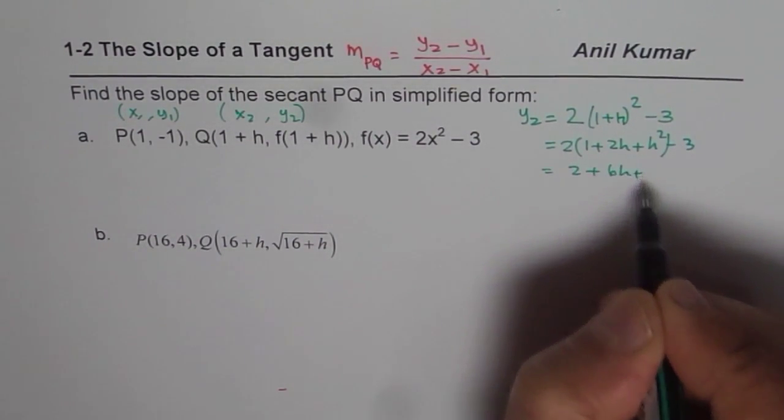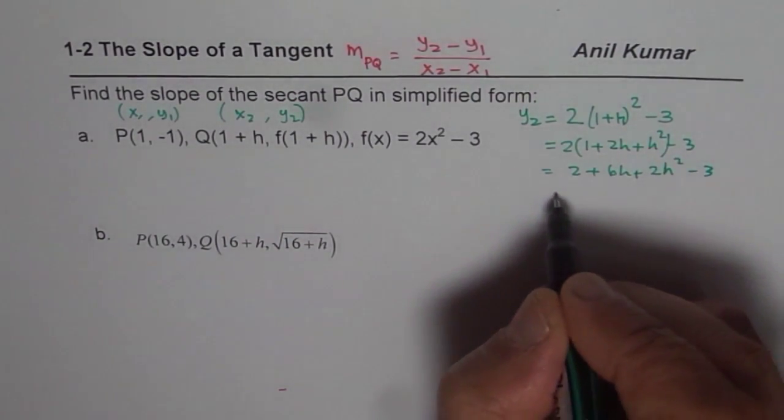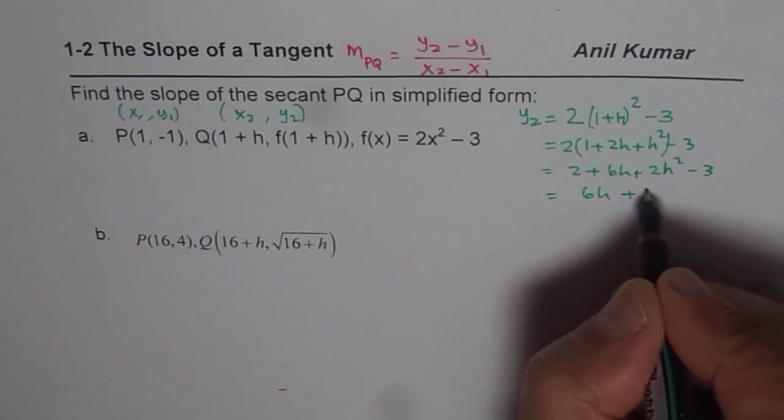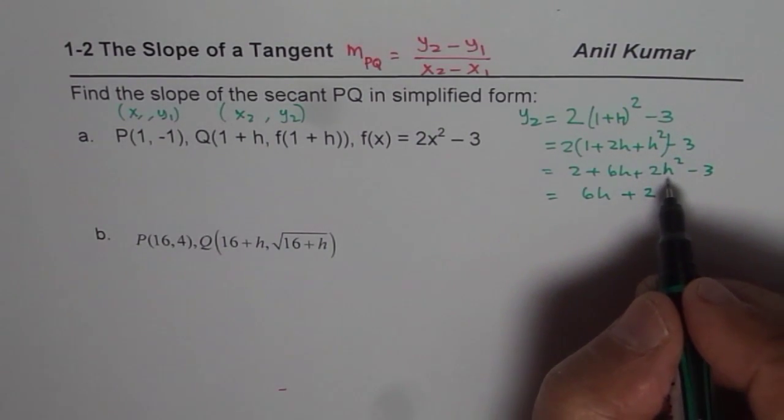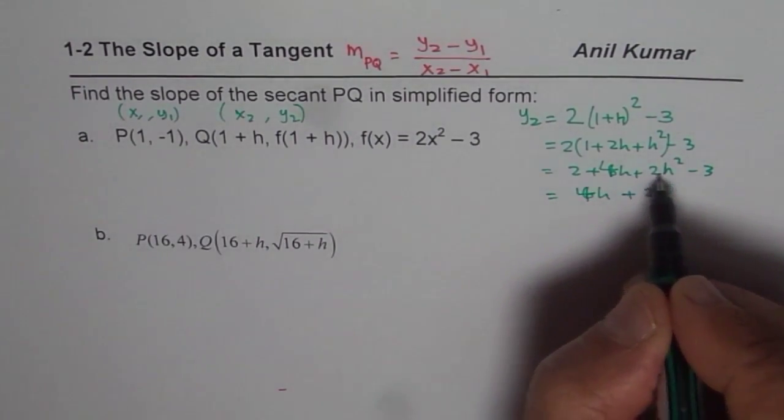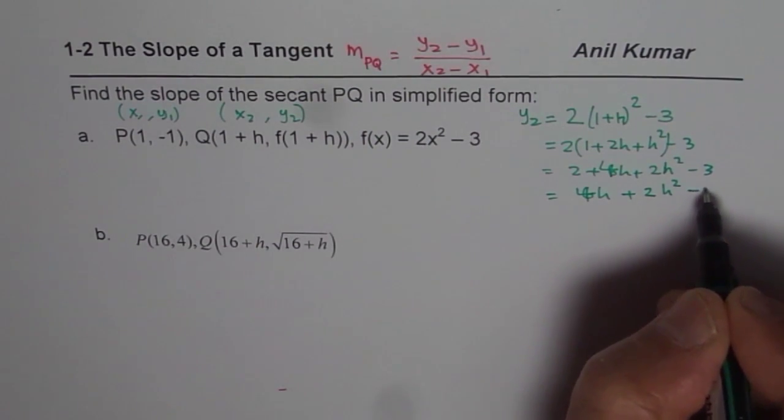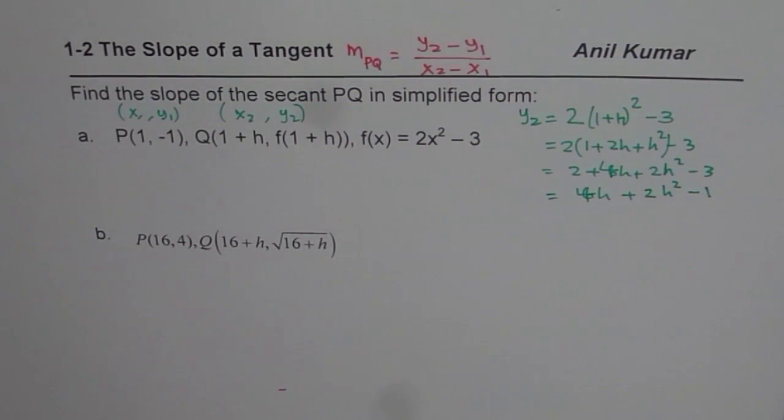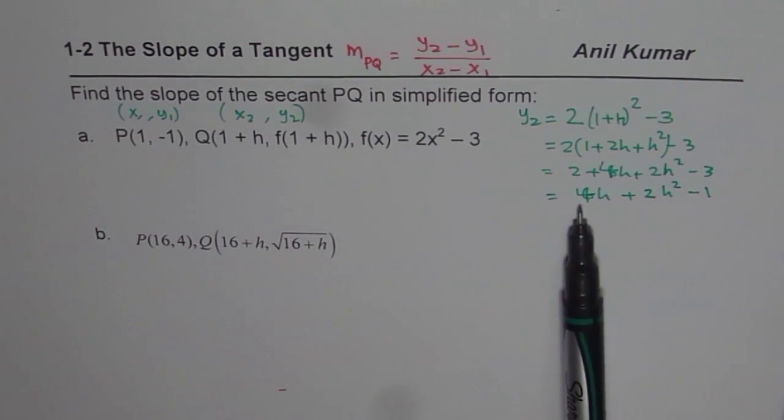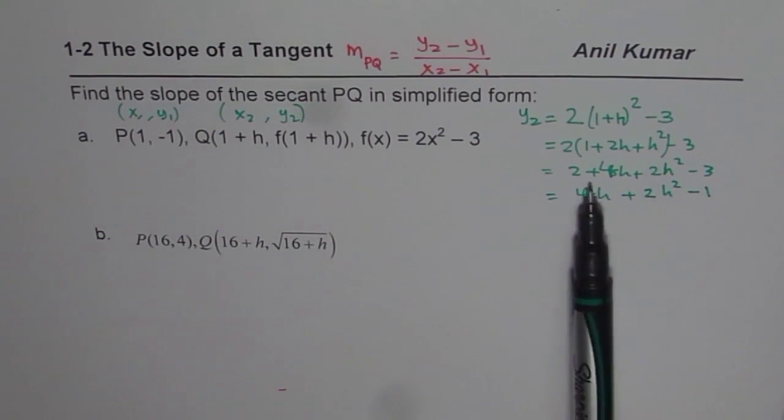So 2+4h+2h²-3. And that could be simplified as, 2 times 2 is 4, so not 6h, but 4h. So 4h+2h² and 2-3 is -1, correct? So that is how it simplifies. Now, we know that y₂ is 4h+2h²-1, so just combine these two.